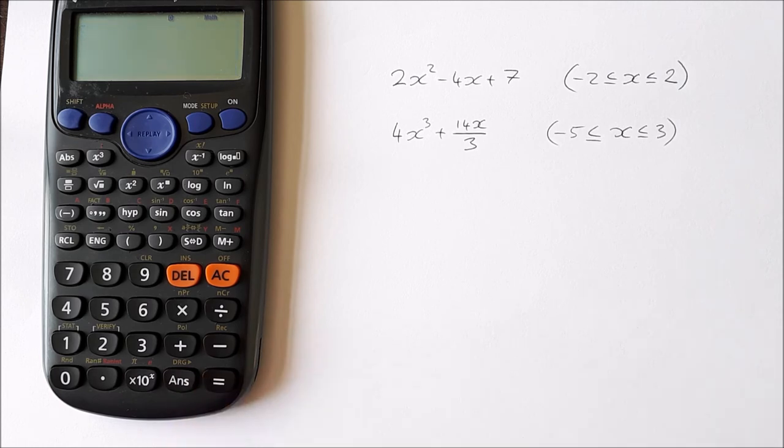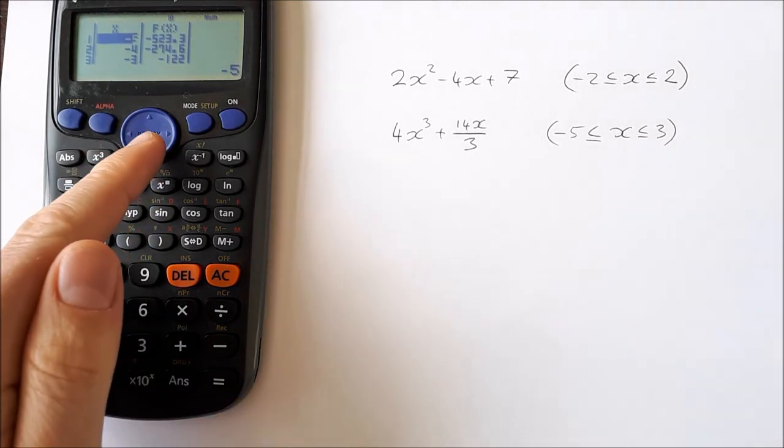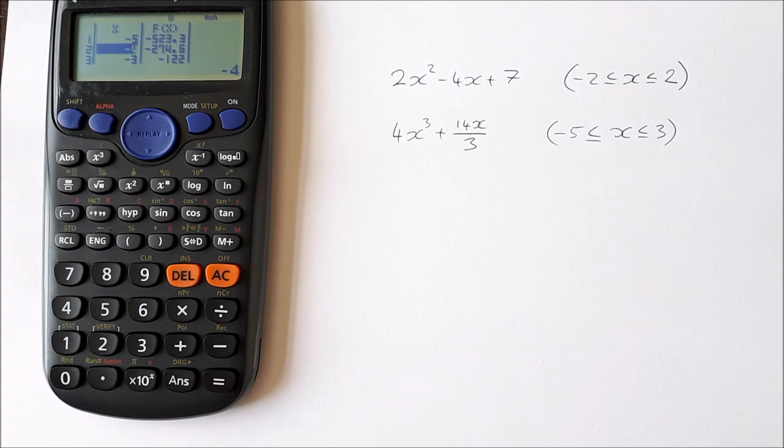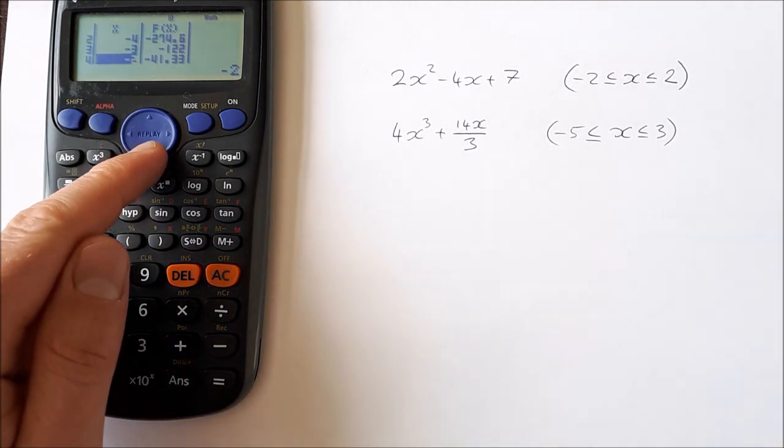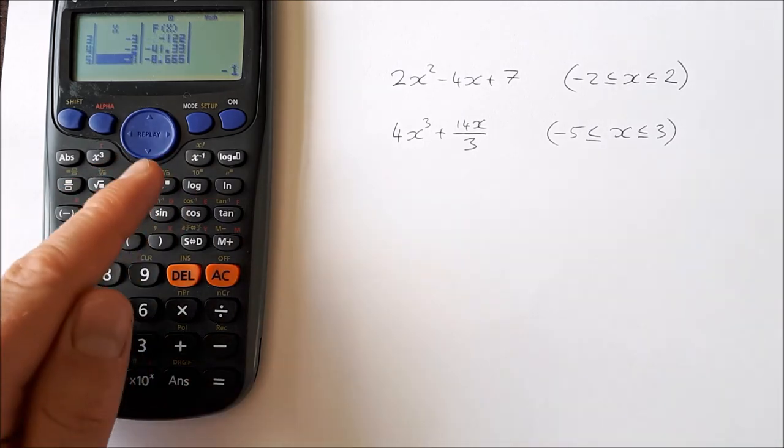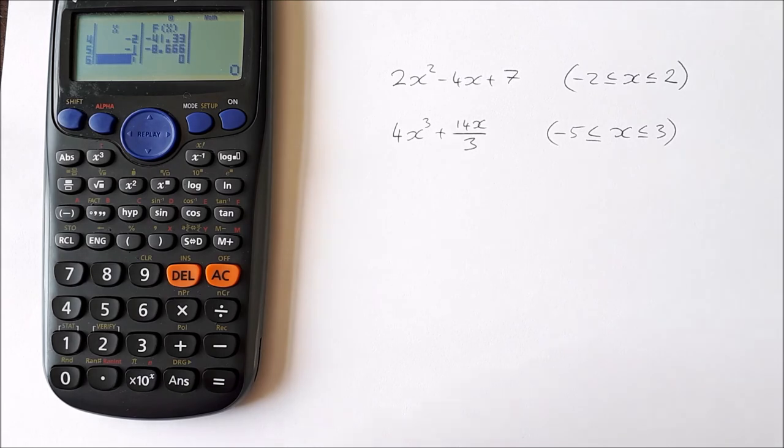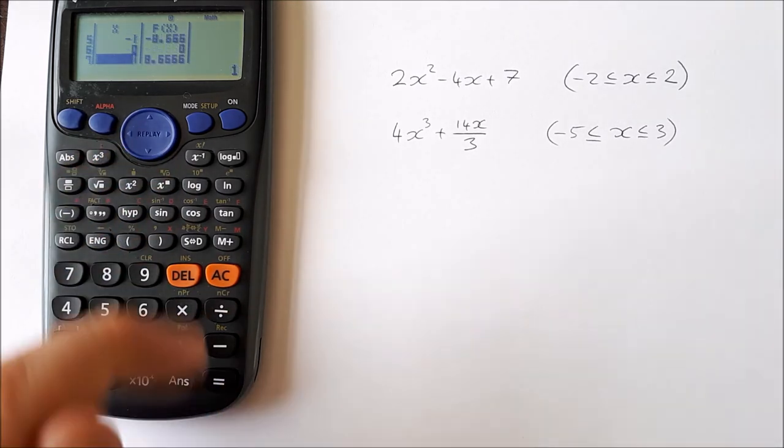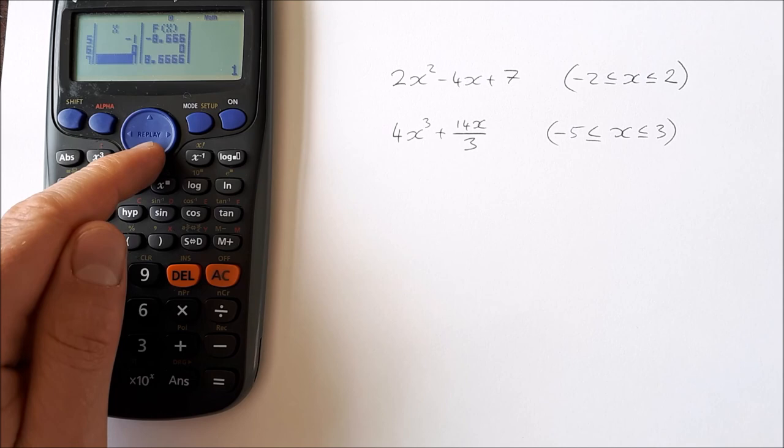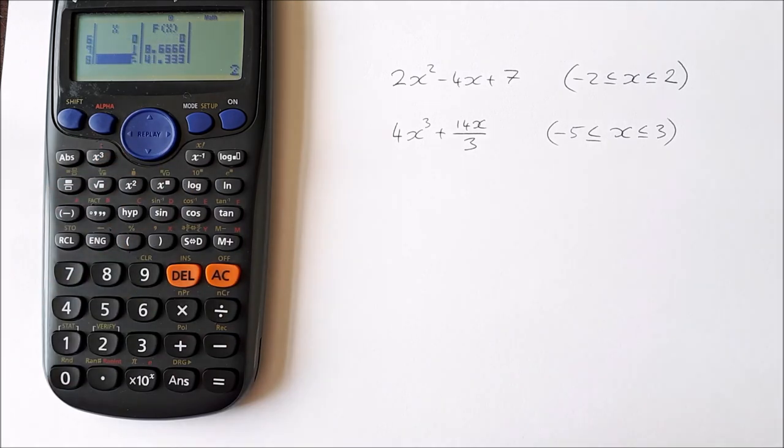Equal, and now we have our table here. When x is -5, f(x) is -523.3. When x is -4, f(x) is -274.6. When x is -3, f(x) is -122. When x is -2, f(x) is -41.33. -1 and -8.666. 0 and 0. 1 and 8.6666. And 2 and 41.33.